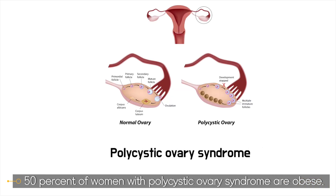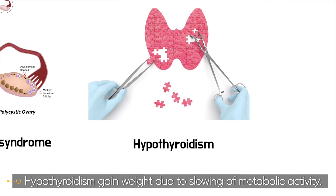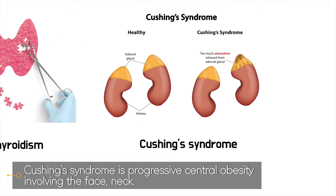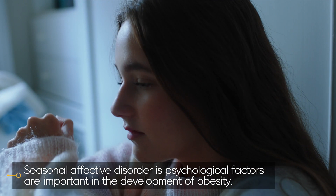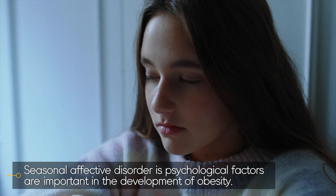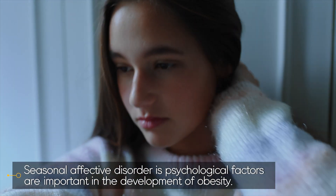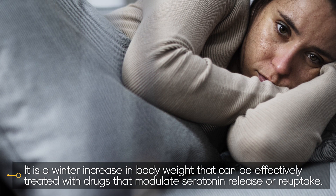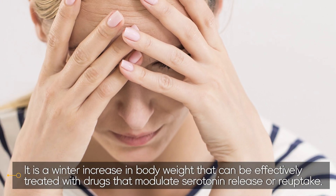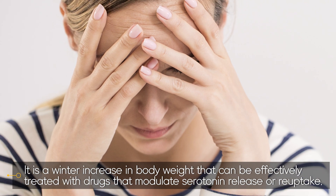50% of women with polycystic ovary syndrome are obese. Hypothyroidism causes weight gain due to slowing of metabolic activity. Cushing's syndrome is characterized by progressive central obesity involving the face and neck. Seasonal affective disorder is a psychological factor important in the development of obesity — it is a winter increase in body weight that can be effectively treated with drugs that modulate serotonin release and reuptake.